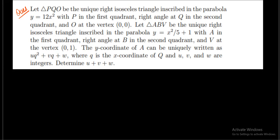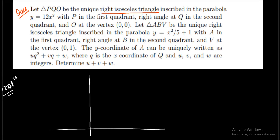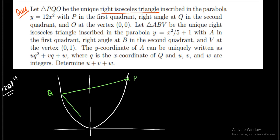The question says that triangle PQO is the unique right isosceles triangle inscribed in the parabola y equals 12x², with P in the first quadrant, right angle at Q in the second quadrant, and O at the vertex (0, 0). I will trace this triangle and the parabola. This is the parabola y = 12x². Since the right angle is at Q, we have PQ = OQ and PQ is perpendicular to OQ.